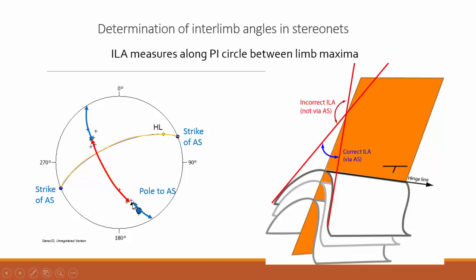What we see in the stereo net — if we have plotted the two limbs as two clusters — are essentially two planes, symbolized here in red lines. Two such planes have intersection angles: an acute one and an obtuse one. From the graphics of the fold we know the interlimb angle is the blue angle — that is the correct one. But if we only know there are two intersecting limbs and don't know the fold orientation, we could theoretically have a fold with a fairly shallow-dipping axial surface. We must correctly determine the interlimb angle across the axial surface — from one limb to the other via the axial surface, not across the other side where there is no axial surface.